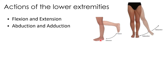Abduction and adduction are two other types of angular movement. Abduction means to move away from the body's midline, and adduction is moving back toward the body's midline. Taking the left leg and pulling it out in a lateral direction is abducting it from the body, while putting it back toward anatomical position is adduction.